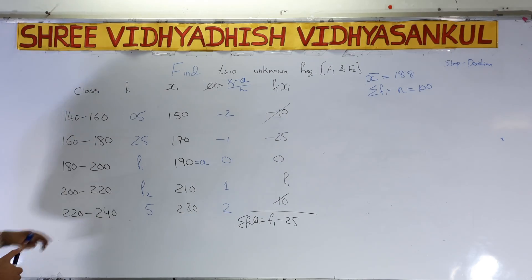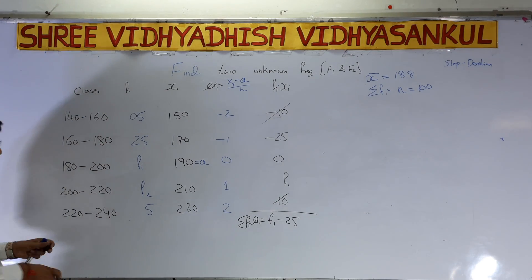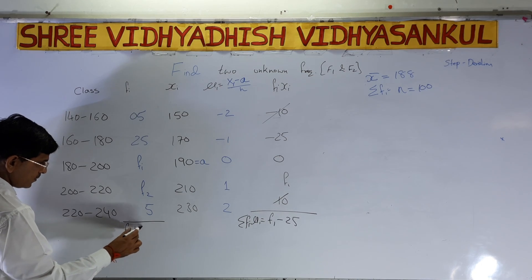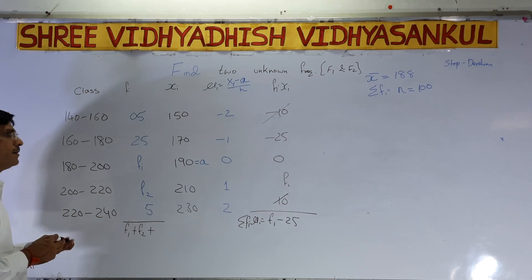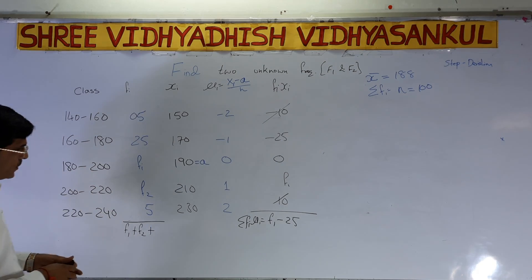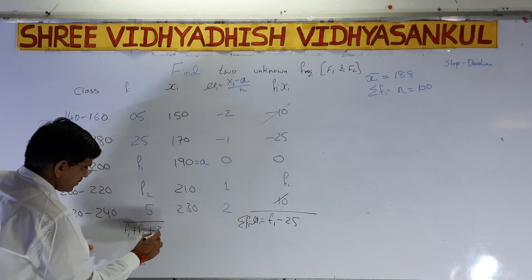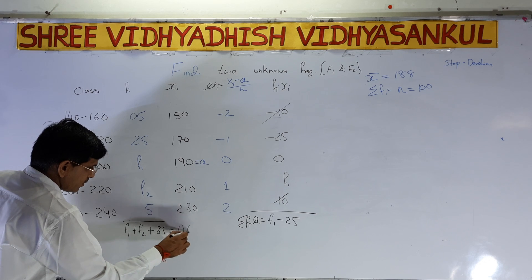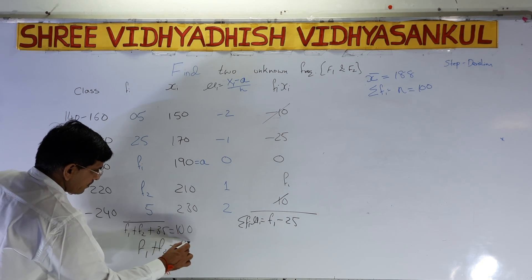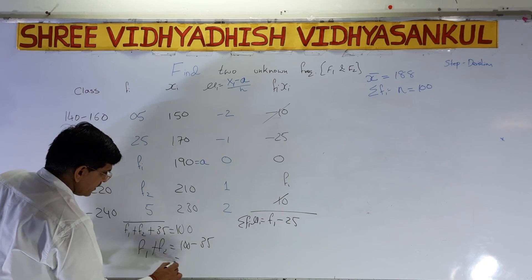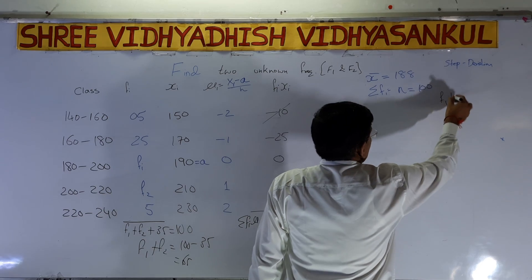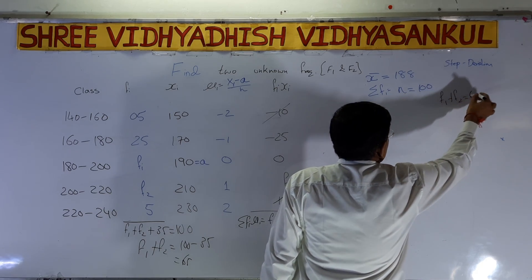Now total all frequencies: 5 + 25 + f1 + f2 + 5 = 35 + f1 + f2 = 100. Therefore f1 + f2 = 100 − 35 = 65. Remember: your final answers for f1 and f2 must sum to 65.